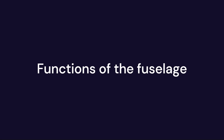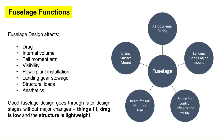Before we proceed to the three standard types of fuselage, we need to consider some of the important functions of the fuselage. Fuselage design affects a lot of other areas such as drag, internal volume, tail moment arm, visibility, powerplant installation, aesthetics, and so on. If not done properly, the fuselage design can lead to problems later in the design process. A good fuselage layout in the conceptual stage goes through the later design stages without major modifications — things fit, the drag is low, and the structure is lightweight. The fuselage is not just a dust cover for the payload.